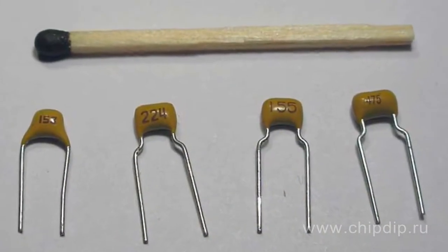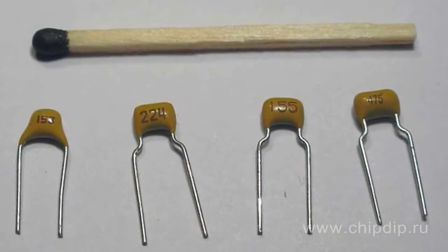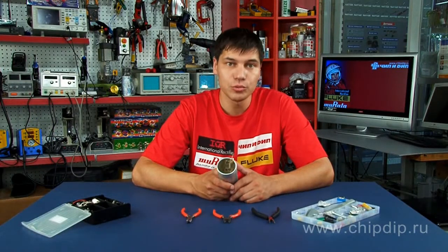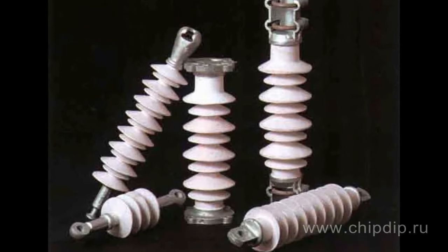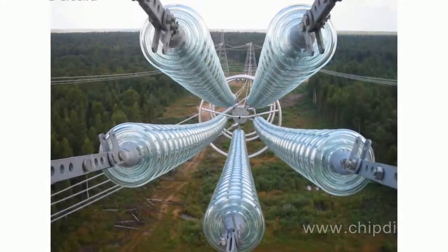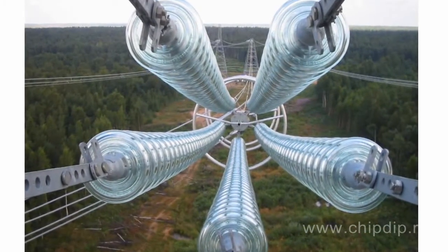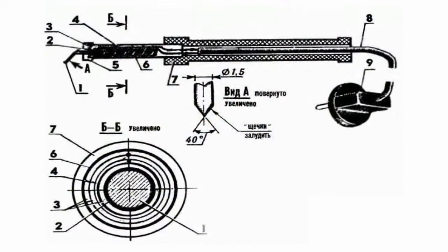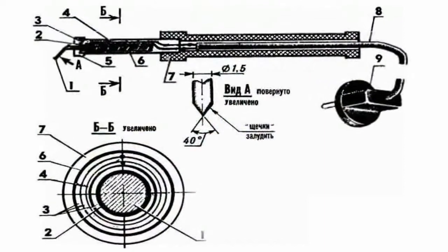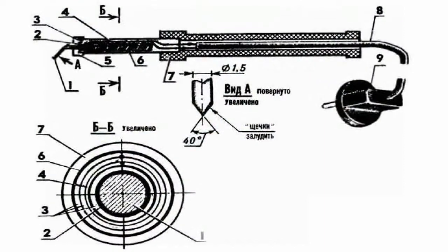It is natural that direct current cannot flow through such an insulator. But why does alternating current flow through it? It is especially strange taking into account that the same ceramics used as porcelain knobs insulate alternating current wire and make a wonderful insulator used in soldering guns, electric irons, and other heaters that work well for alternating current.